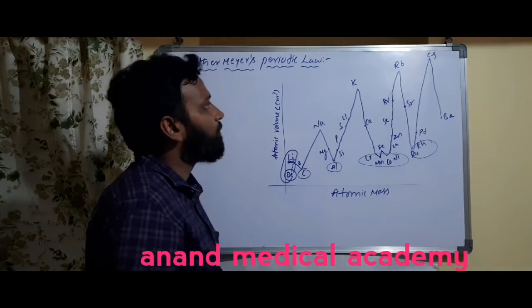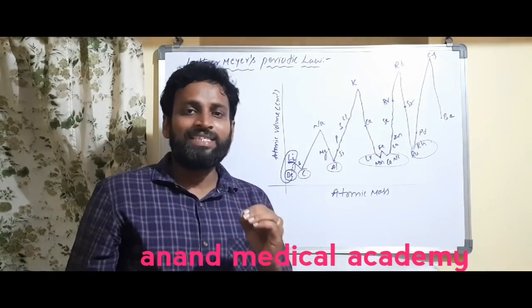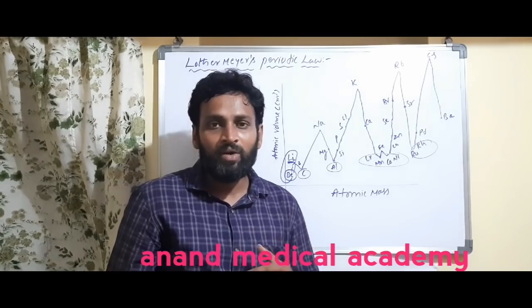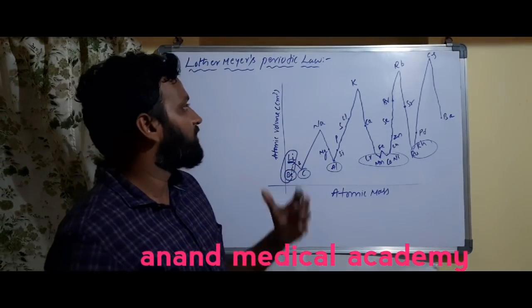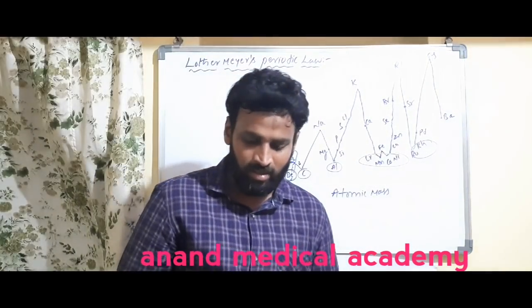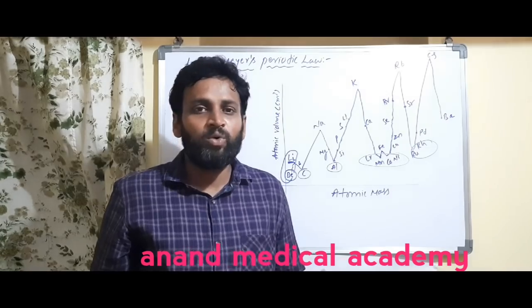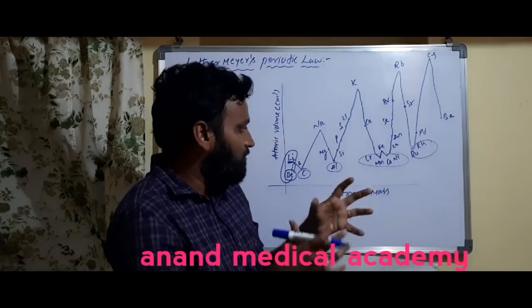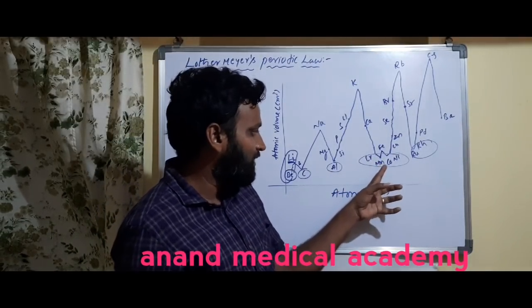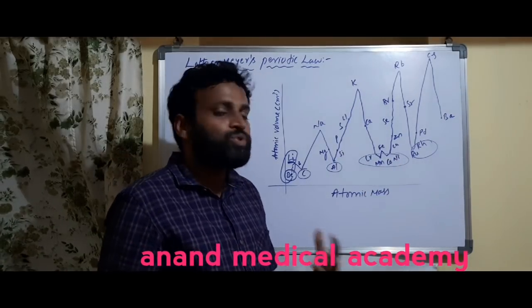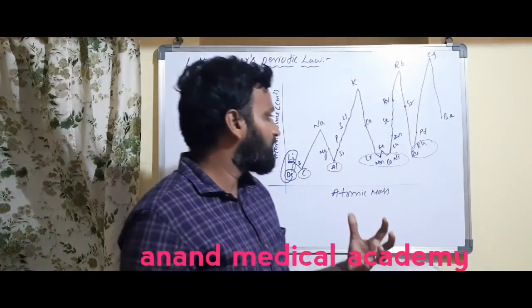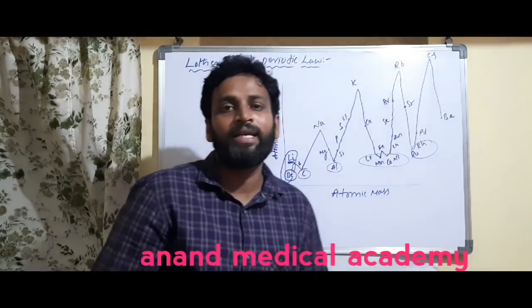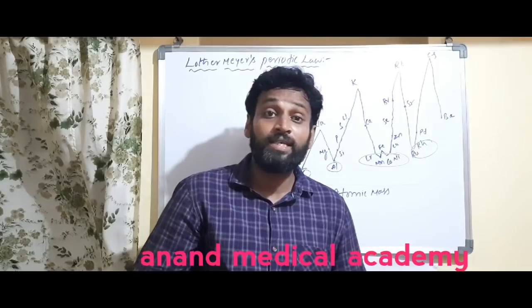In Lothar Mayer's periodic law, the physical and chemical properties of the elements are the periodic function of their atomic volumes. However, there are many demerits — there was no certainty or stability in that classification. It was clumsy; elements like chromium, manganese, cobalt, and nickel — their properties and group membership — were not explained clearly.